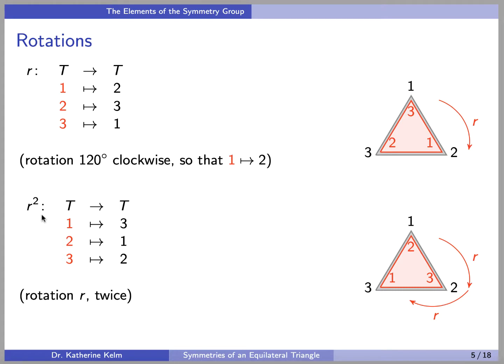R squared will just be doing R twice. So you can see here that if you do R one time, then 1 will get sent to 2. But if you do R again, then 2 will get sent to 3, because R does send 2 to 3.